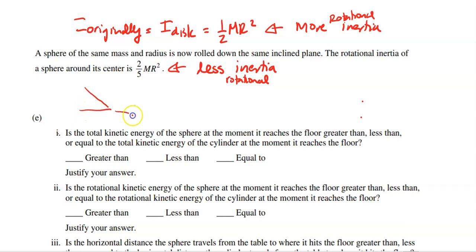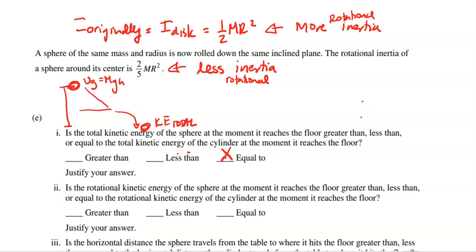First sub-question: is the total kinetic energy of the sphere at the floor greater than, less than, or equal to that of the cylinder? Since both start from the same height with the same mass, UG is the same. By conservation of energy, UG equals total KE, and since nothing changes, the total kinetic energy is equal in both cases.